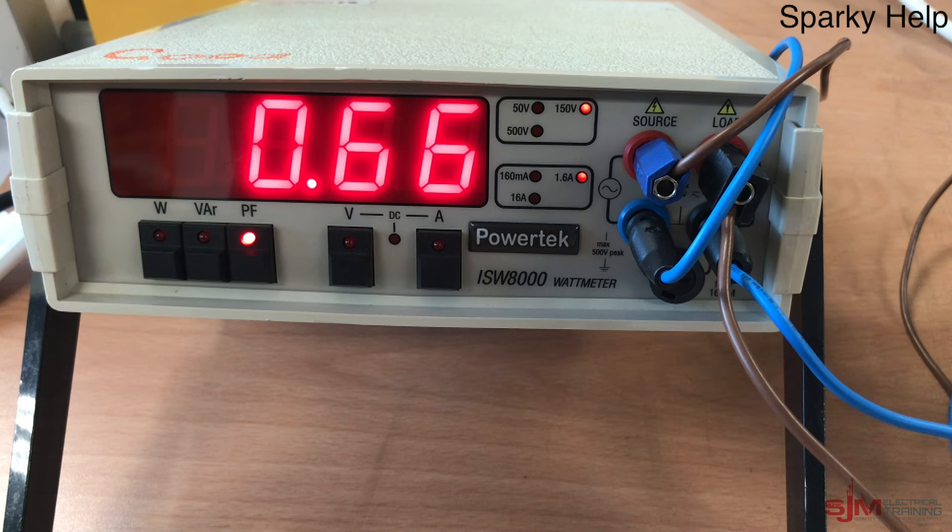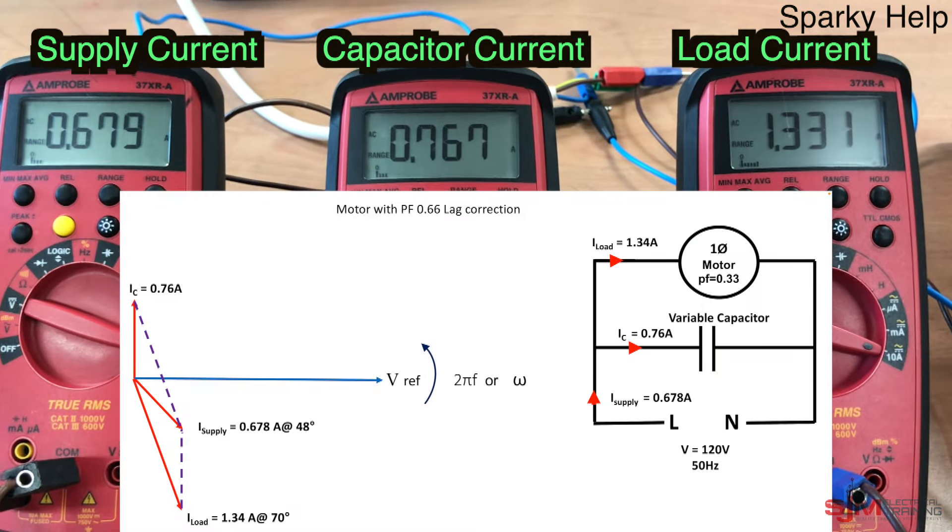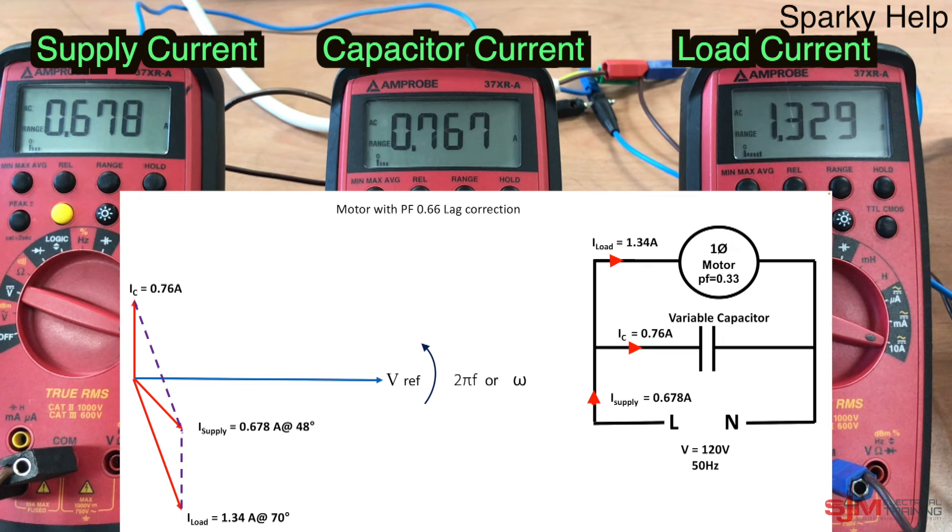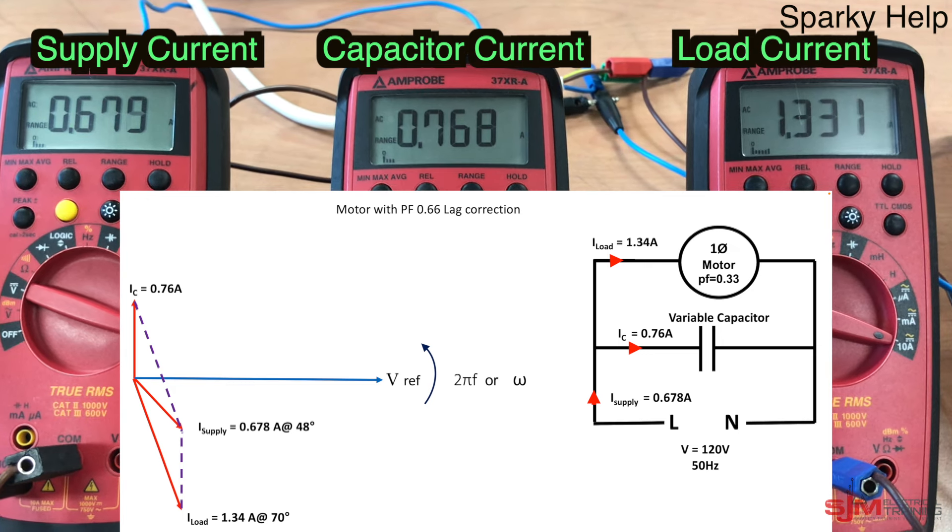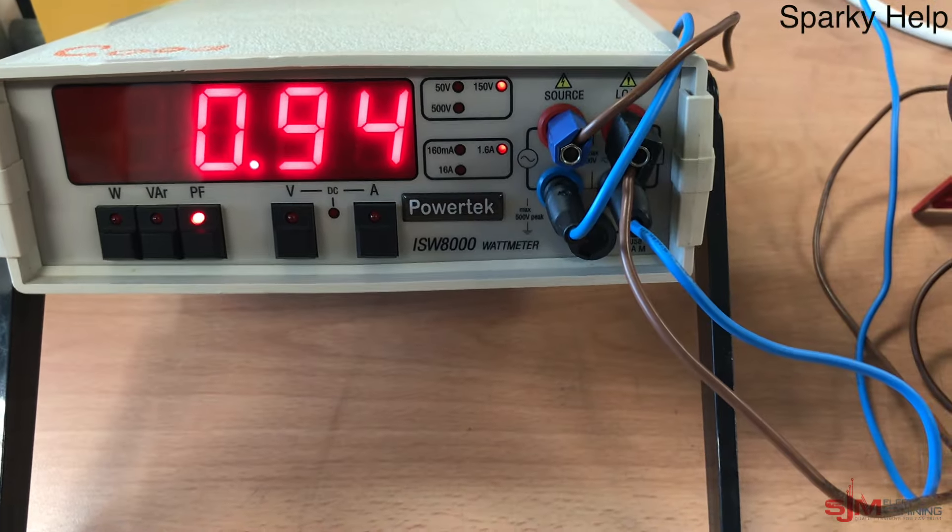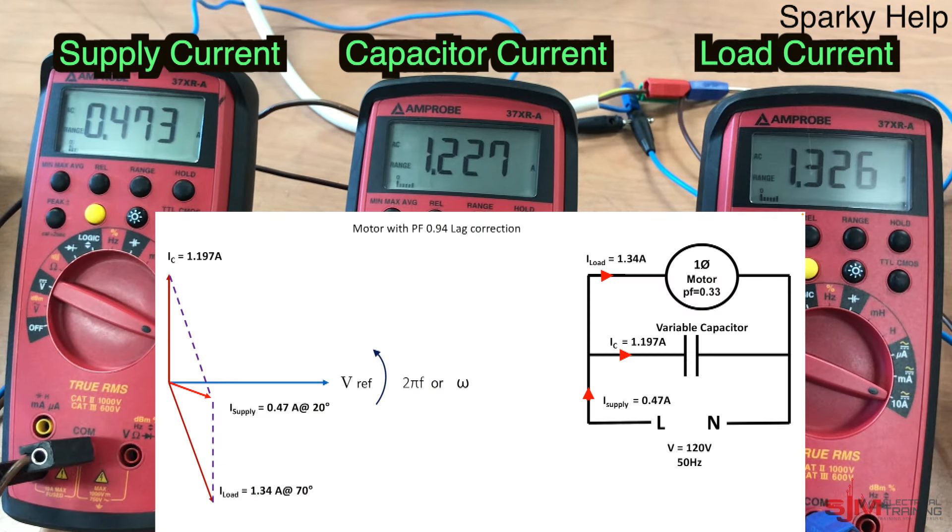Let's add in some capacitance. As we can see the power factor has improved to 0.66. Let's have a look and see what it does to the currents. And the phasor diagram. So the phasor diagram has moved up. The supply current has gone down. And we have current going through the capacitor. And the supply to the load is still the same. And the power is still the same.